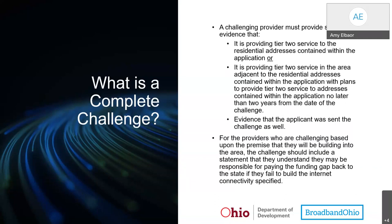A challenging provider must provide satisfactory evidence that it is currently providing Tier 2 service to the residential addresses contained within the application, or that it is providing Tier 2 service in an area adjacent to those residential addresses with plans to provide Tier 2 service to those addresses no later than 2 years from the date of the challenge.